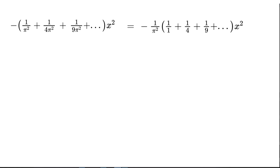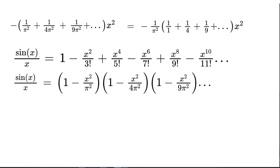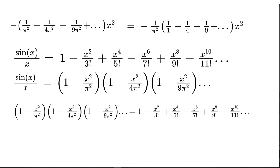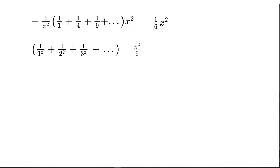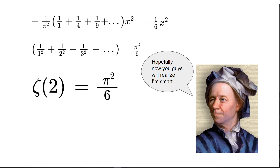Let's try comparing our original Maclaurin series for sine(x)/x to the infinite product form for sine(x)/x. Since these two functions are equal, we can compare the coefficients of the different terms of x. Comparing the coefficient of x² in our infinite product formula to the coefficient of x² in the Maclaurin series, we get −1/π² times (1/1 + 1/4 + 1/9 + …) times x² equals −1/6 · x². Dividing both sides by x², multiplying π² to the other side, and dividing by negative 1, we get 1/1² + 1/2² + 1/3² + … = π²/6. That is how Euler found that zeta(2) = π²/6.